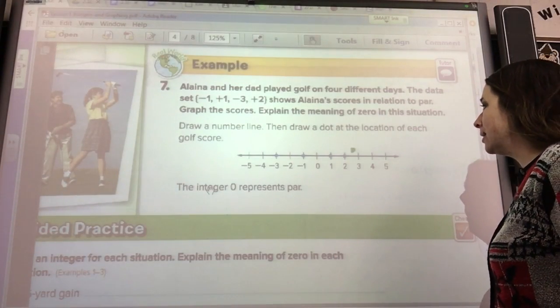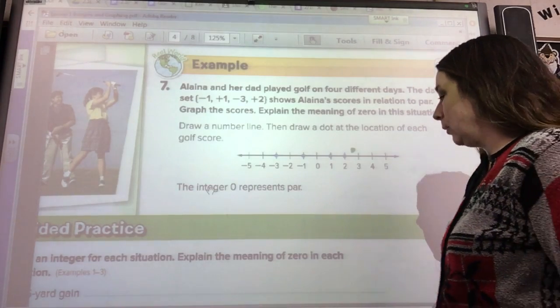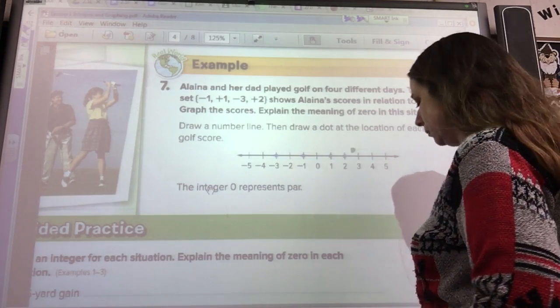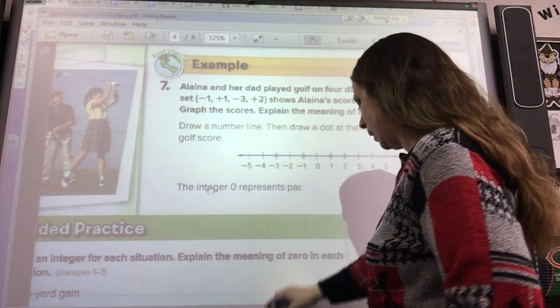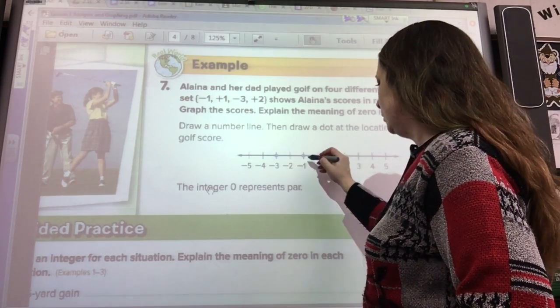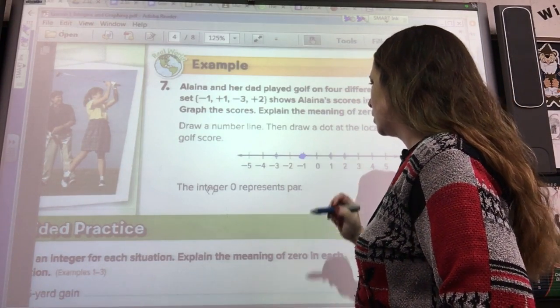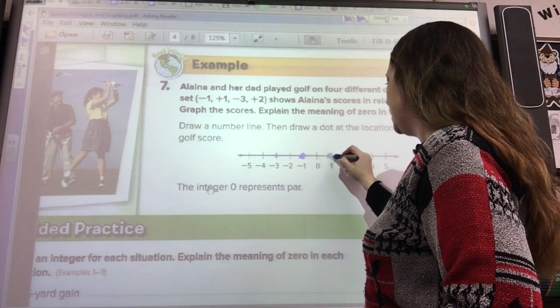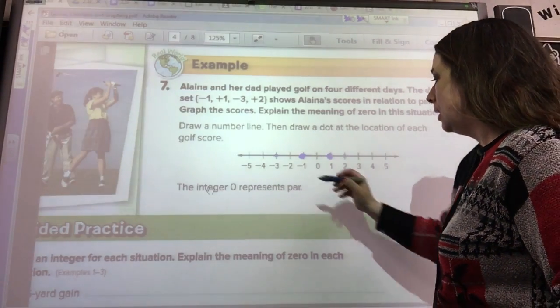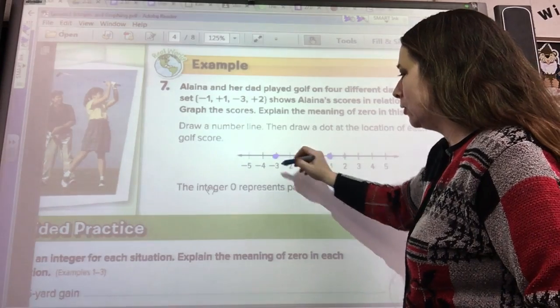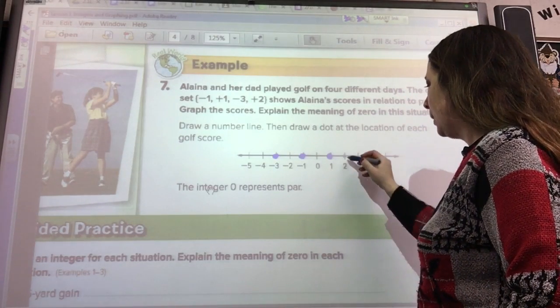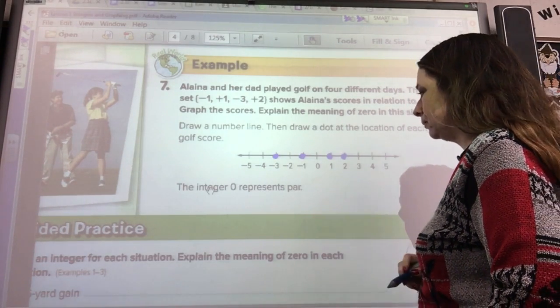Okay, draw a number line and draw the dot at the location of each. We have a negative one. Oh, they already did that for us. That's a good shot. Positive one means that they went over par by one. Negative three means they went way under, so that's really a good score. And positive two means they went over.